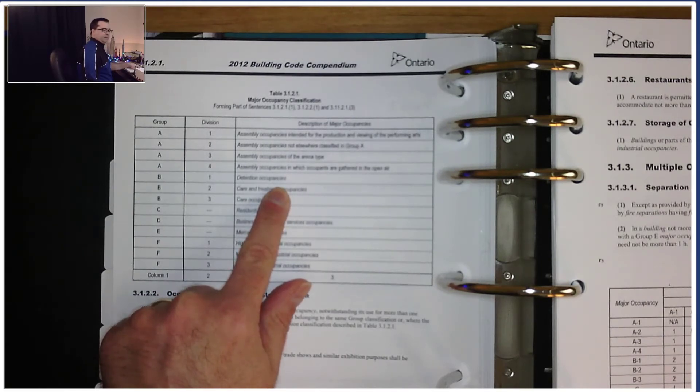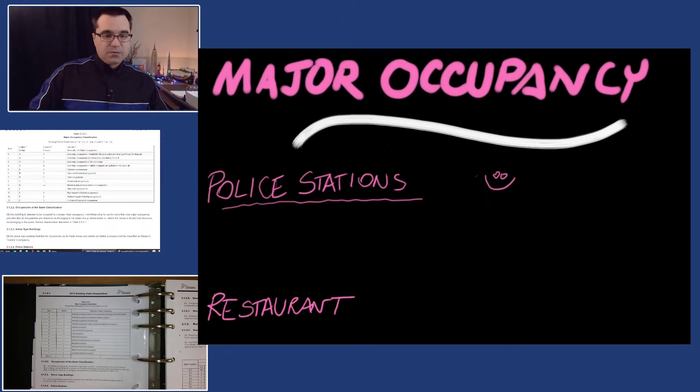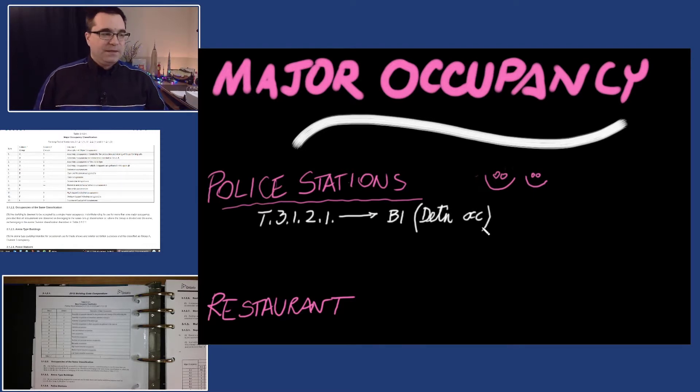I'm going to move back to my tablet view. I'm super happy, so I'm going to draw another smiley face. I'm going to make a note that from Table 3.1.2.1 we found that police stations were a B1 occupancy. A B1 occupancy is defined as a detention occupancy. Voila, we're all done, right?